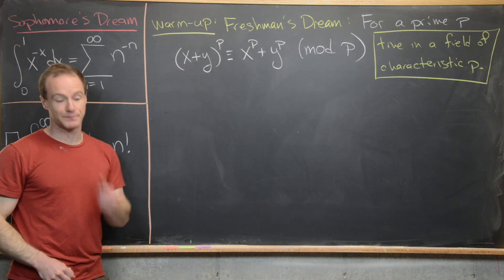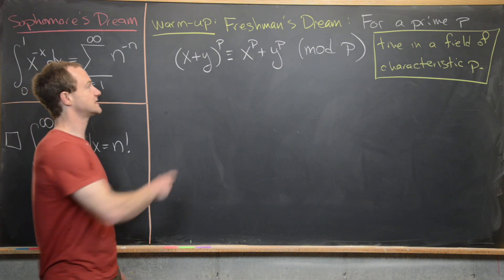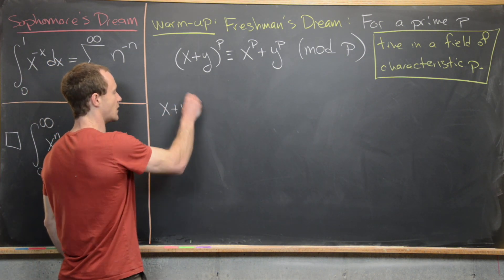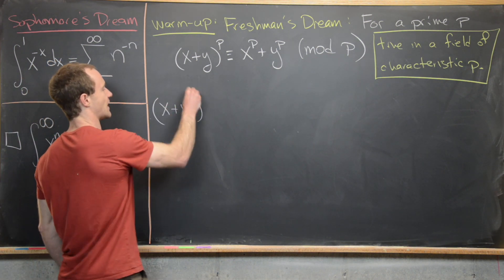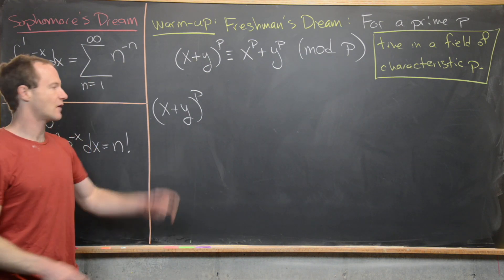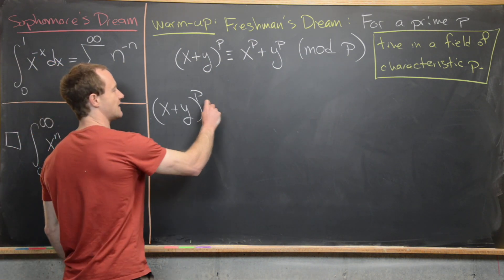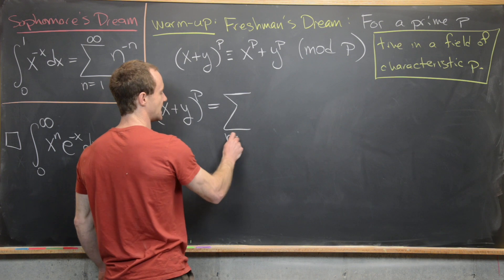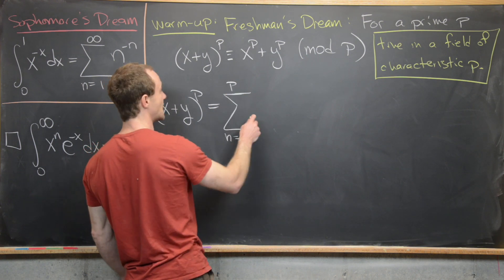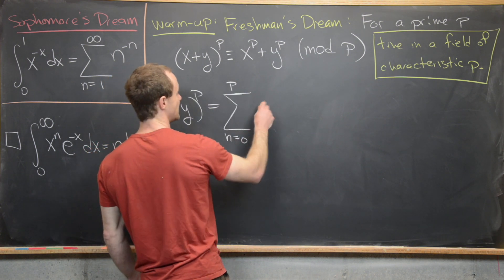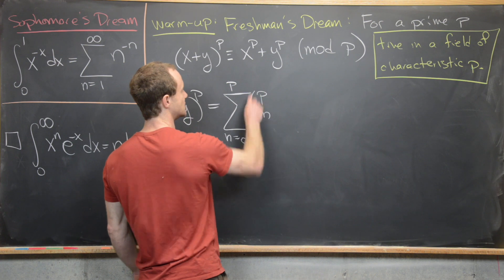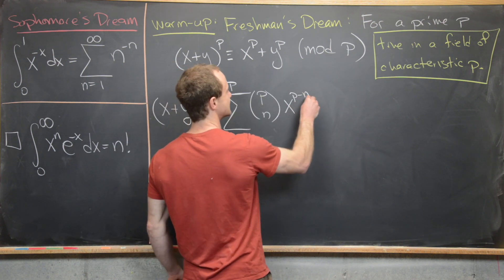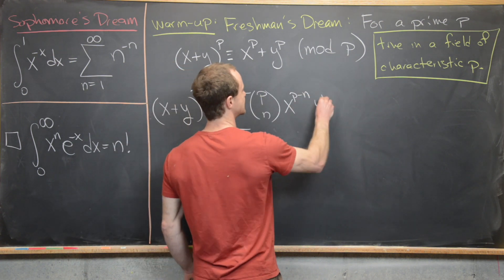We'll work with the mod p version. Let's start with the left-hand side of the equation: x plus y to the p. We expand that as a binomial, giving us the sum from n equals 0 up to p of the binomial coefficient p choose n, times x to the p minus n, times y to the n.